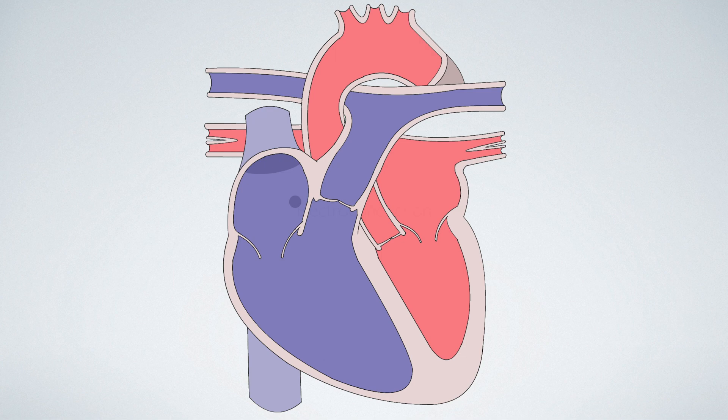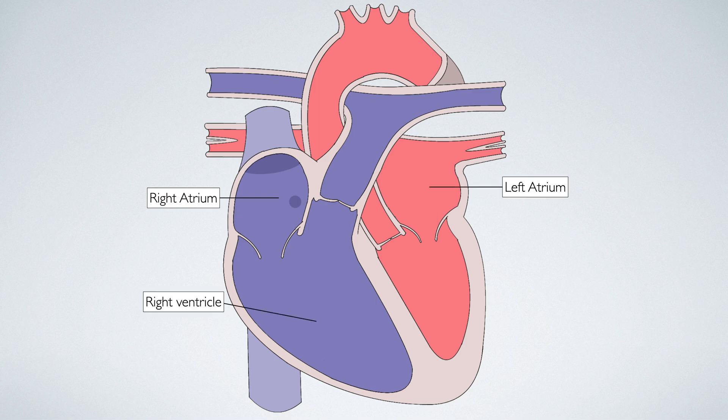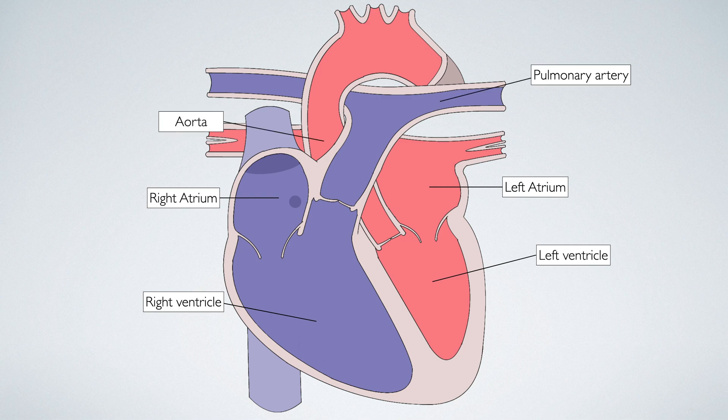Here is a diagram of the heart. There are four chambers of the heart. The upper chambers are the right atrium and the left atrium, and the lower chambers are the right ventricle and the left ventricle. The outflow tracts are the aorta and the pulmonary artery.